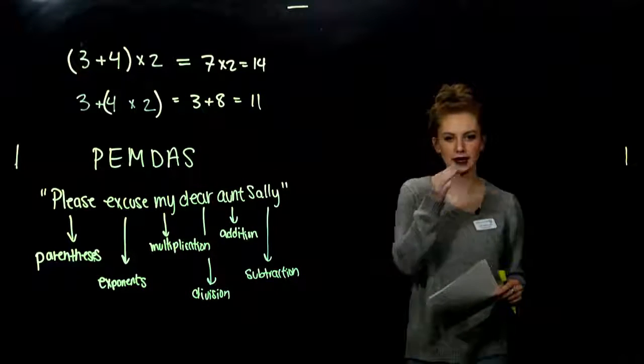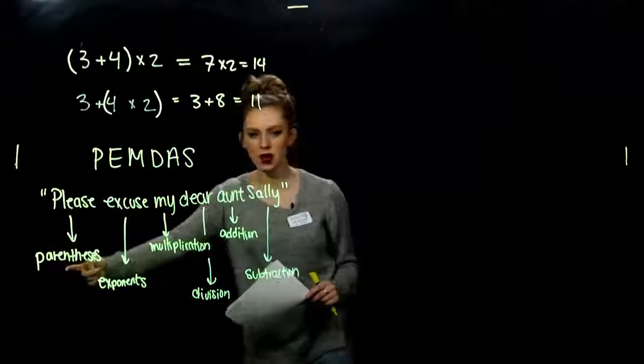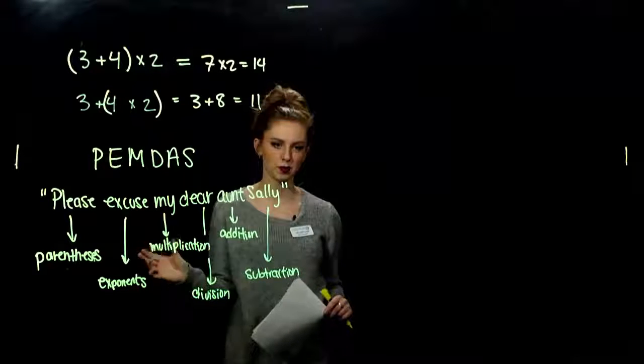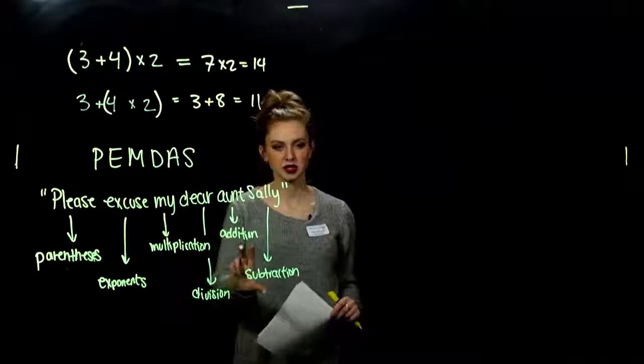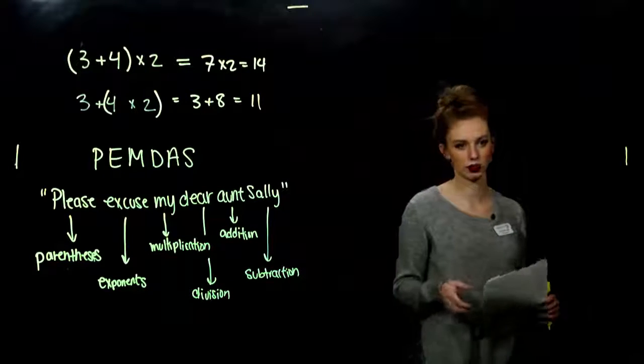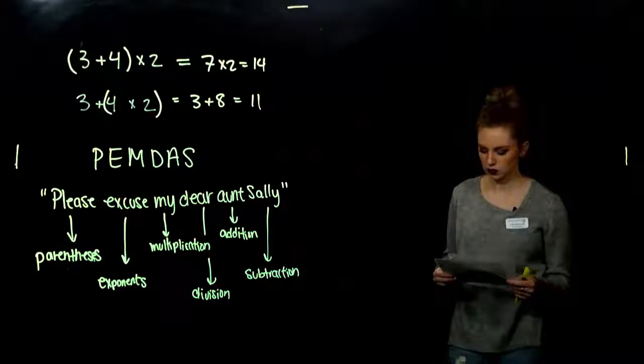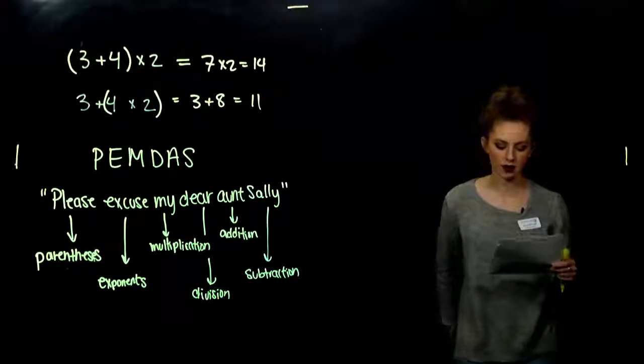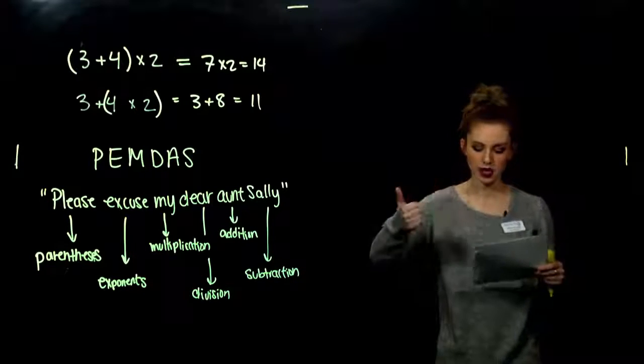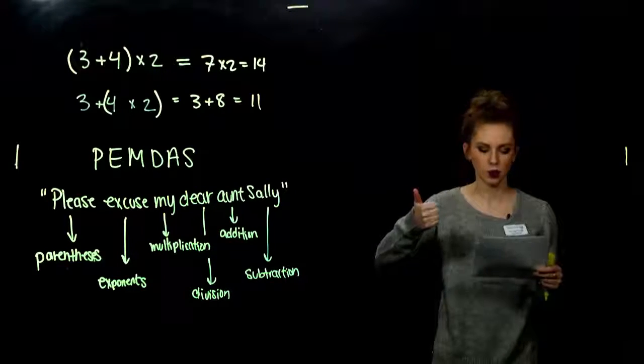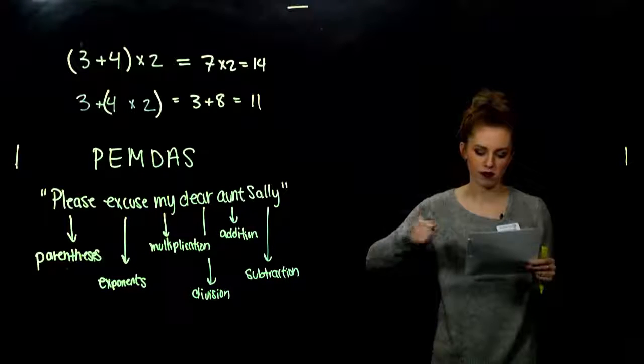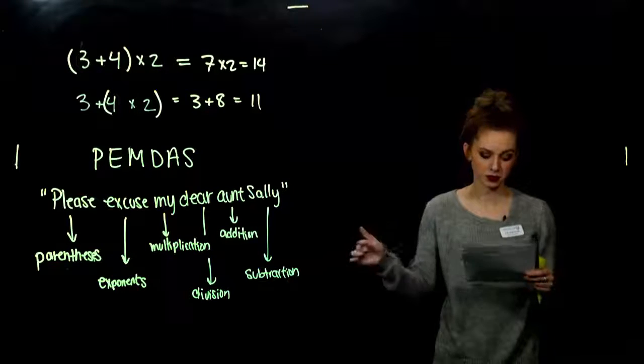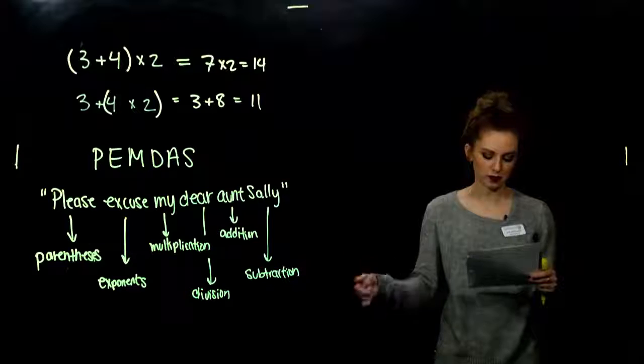All right, so that tells us the order we should go in. Any kind of grouping symbols. Take care of the insides first. Then deal with the exponents. Multiply and divide. This order doesn't really matter. Typically, we just go left to right. And addition and subtraction. That order doesn't matter. But again, traditionally, we just go left to right. So, summing up what this acronym says in that nice little box. Rules for order of operations. Do all calculations within the grouping symbols first. Start there. Work from the inside of the onion out. Then evaluate all exponential expressions. Do the multiplication and divisions in order from left to right. Do addition and subtractions from left to right.